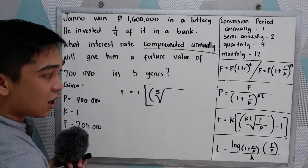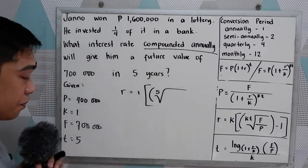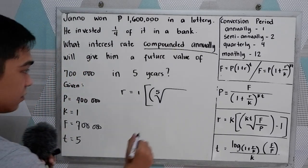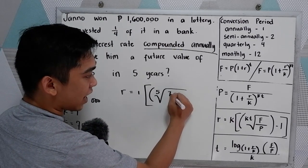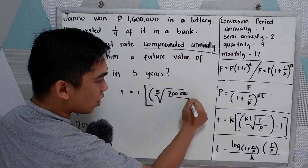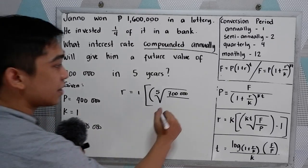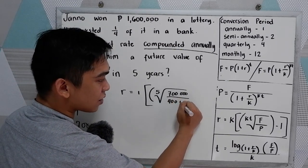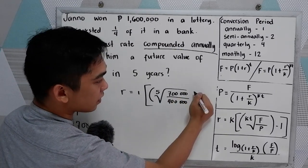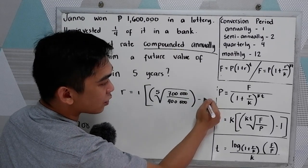So that would become fifth root of F over P. So F is 700,000 all over our P is 400,000. Close. Minus one.